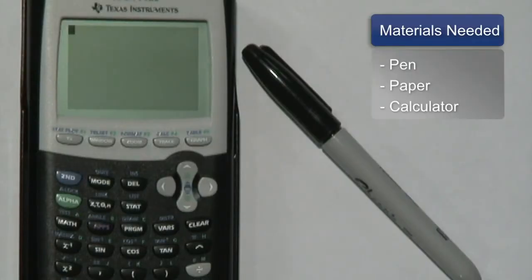There are many different three-dimensional objects out there, so we're here to talk about a few common shapes and what the volume of each shape is. All you really need is a pen, paper, and a calculator if you need it.